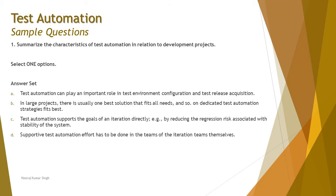Option C: test automation supports the goals of an iteration directly by reducing the regression risk associated with stability of the system. This does not meet expectations either — when talking about automation supporting iteration goals, the system must be stable first before applying automation tool support. Also, automation is not limited to automating tests; it includes automating deployment, build deliveries, and continuous integration, so it's not limited to an internal or external team alone.